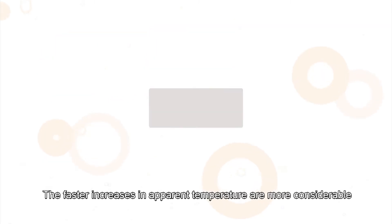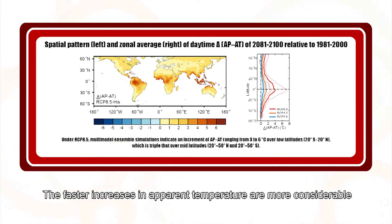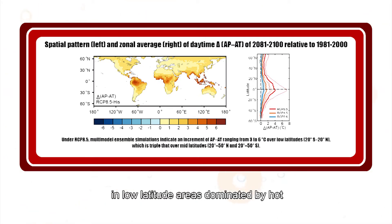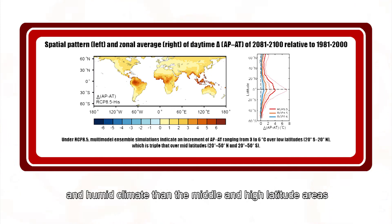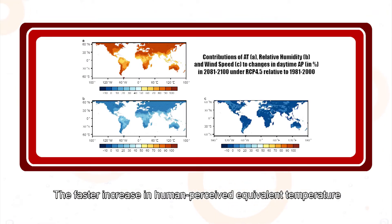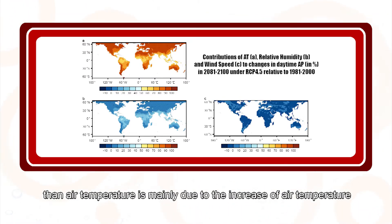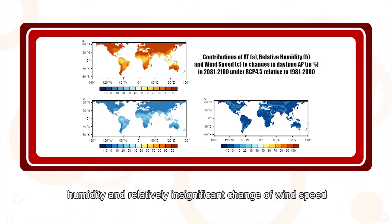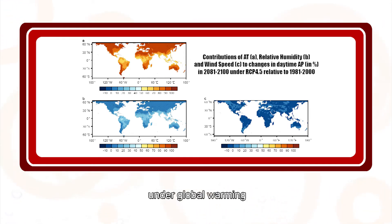The faster increases in apparent temperature are more considerable in low latitude areas dominated by hot and humid climate than in middle and high latitude areas. The faster increase in human perceived equivalent temperature than air temperature is mainly due to the increase of air temperature, humidity, and relatively insignificant change of wind speed under global warming.